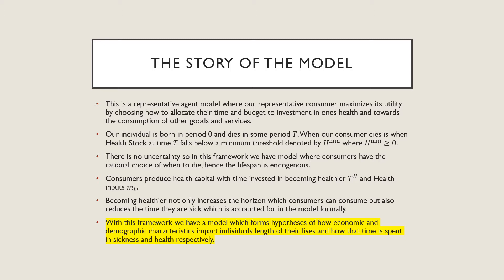So the story of this model is as follows. This is a representative agent model where our representative consumer maximizes its utility by choosing to allocate their time and budget to invest in one's health and towards the consumption of other goods and services. Our individual is born in period zero and dies in some period capital T. The way our consumer dies is when the health stock at this terminal period T falls below some minimum threshold denoted by H min, where this minimum stock is greater than or equal to zero.